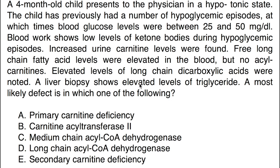A 4-month-old child presents to the physician in a hypotonic state. The child has previously had a number of hypoglycemic episodes, at which times blood glucose levels were between 25 and 50 milligrams per deciliter. Blood work shows low levels of ketone bodies during hypoglycemic episodes. Increased urine carnitine levels were found. Free long-chain fatty acid levels were elevated in the blood, but no acyl-carnitins. Elevated levels of long-chain dicarboxylic acids were noted. A liver biopsy shows elevated levels of triglyceride. The most likely defect is in which one of the following.